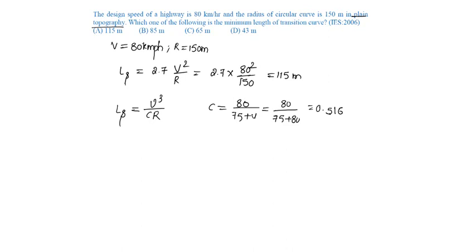V is 80 ÷ 3.6 to convert to meters per second, c is 0.516, r is 150, which equals 141.78 meters.